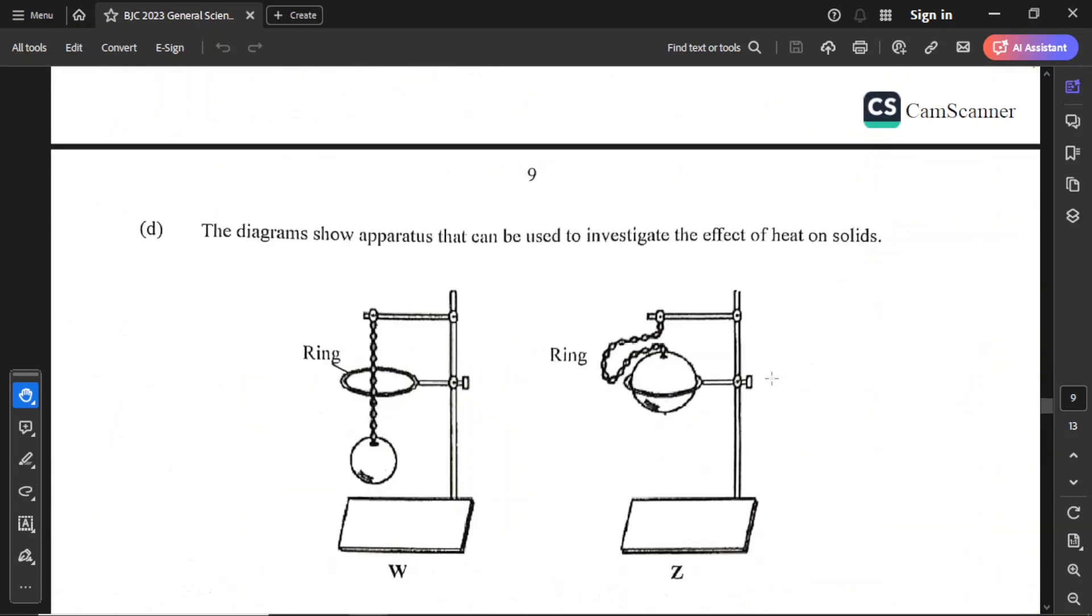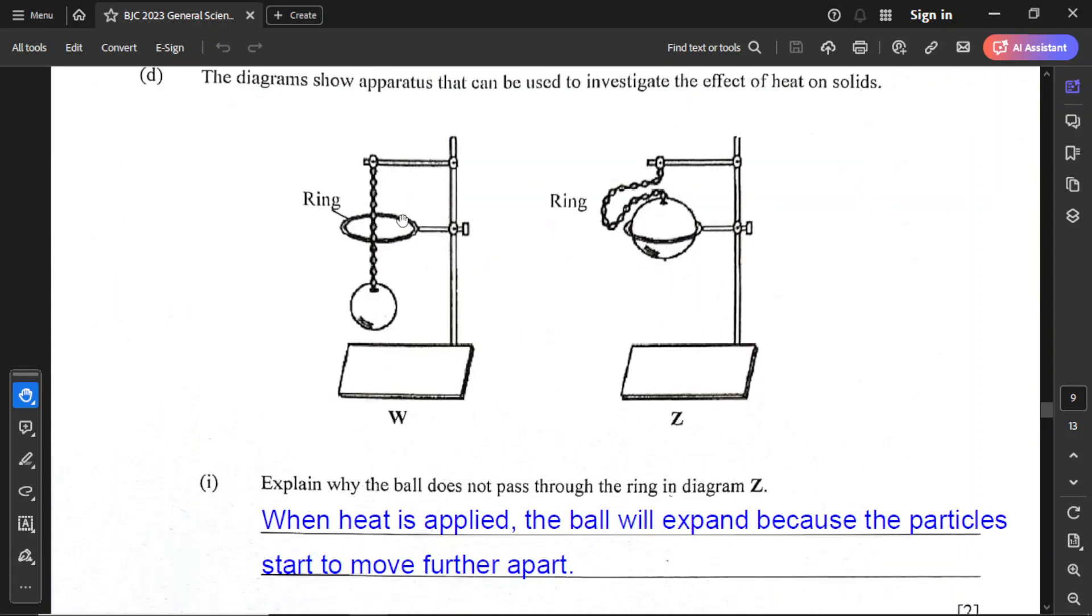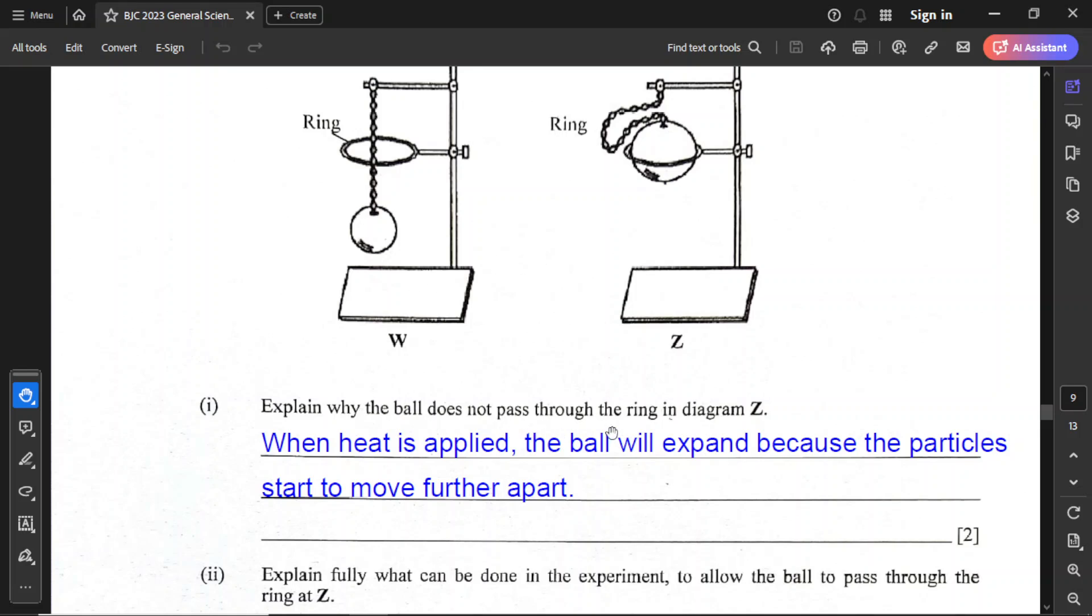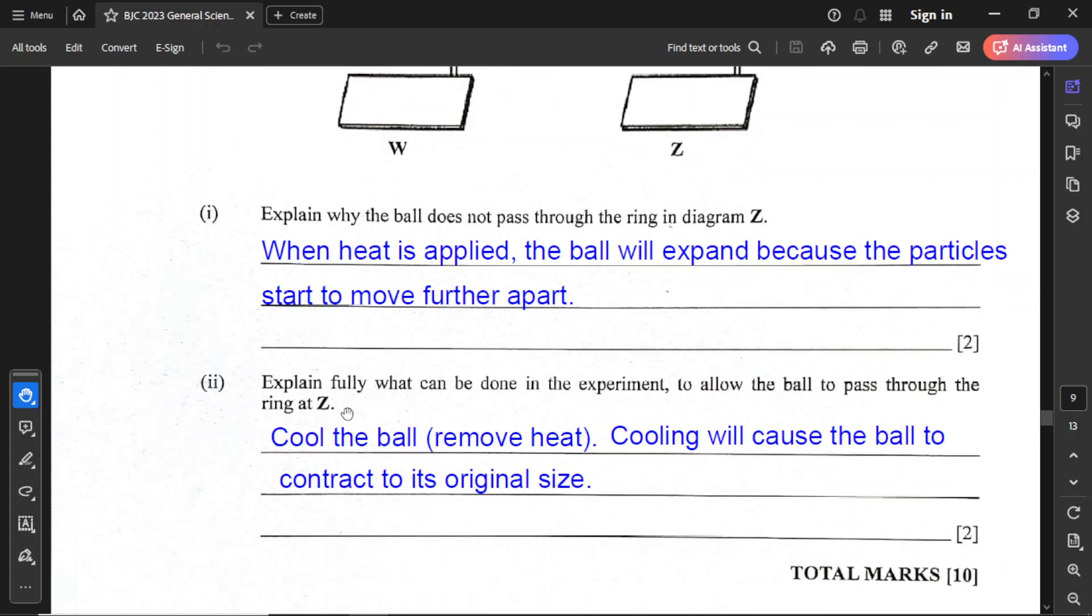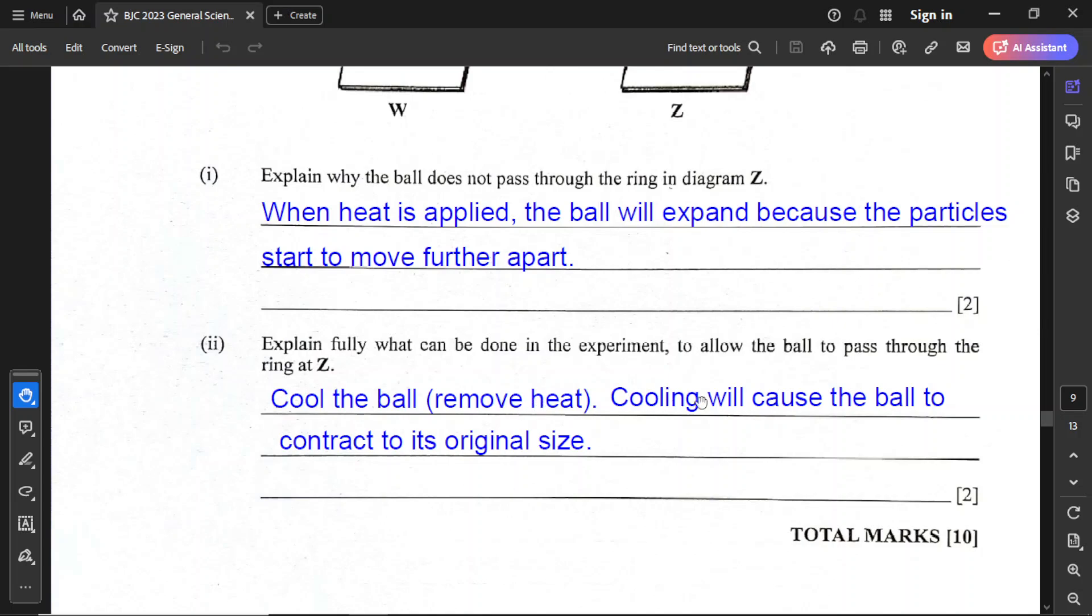For part D, diagrams show apparatus that can be used to investigate the effect of heat on solids. Let's observe first. You notice you see a ring, and the ball can go through the ring. At W and Z, it is unable to go through. Explain why the ball does not pass through the ring in Z. Simply because when heat is applied, the ball will expand because the particles start to move further apart. For part two, explain fully what can be done in the experiment to allow the ball to pass through the ring at Z. You can cool the ball to remove heat, and cooling will cause the ball to contract to its original size.